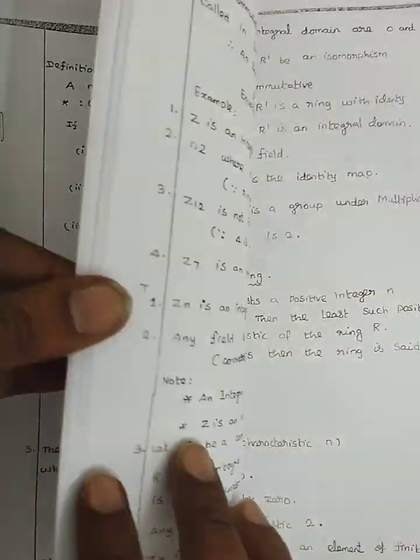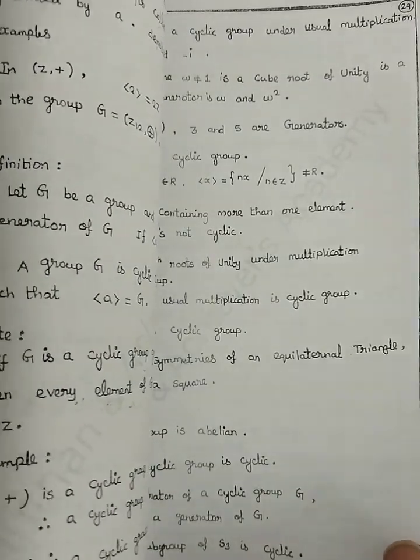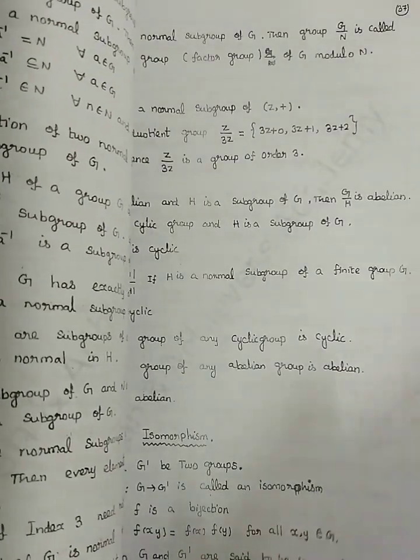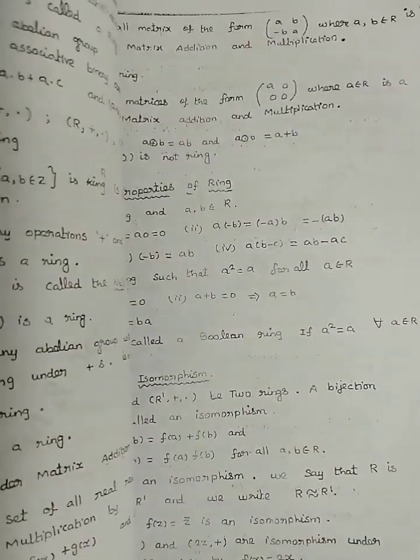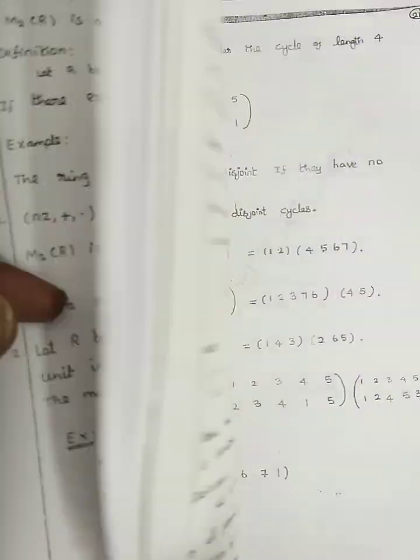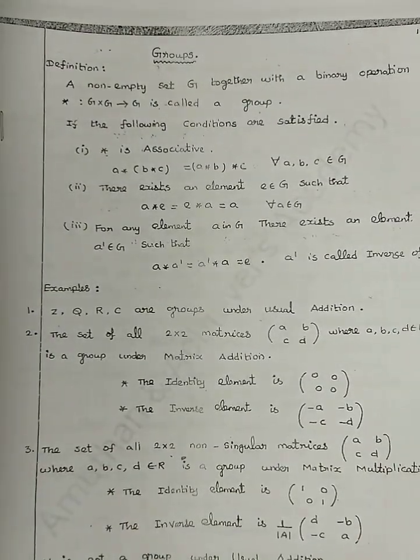Groups: subgroups, abelian groups, cyclic groups, permutation groups. Rings: homomorphism. Fields and vector spaces. These are the topics covered.